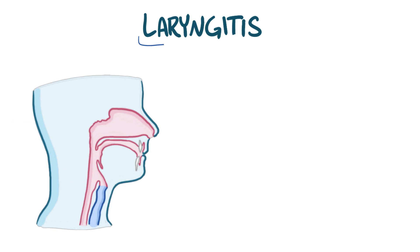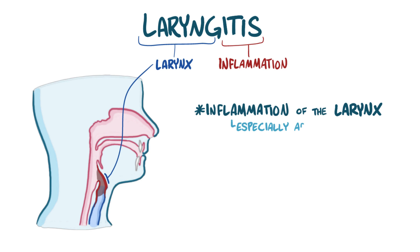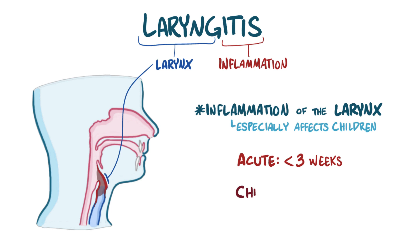With laryngitis, 'larynx' refers to the larynx and 'itis' refers to inflammation. So laryngitis is inflammation of the larynx, something that especially affects children. It's further classified into acute if it lasts less than three weeks, and chronic if it lasts more than three weeks.